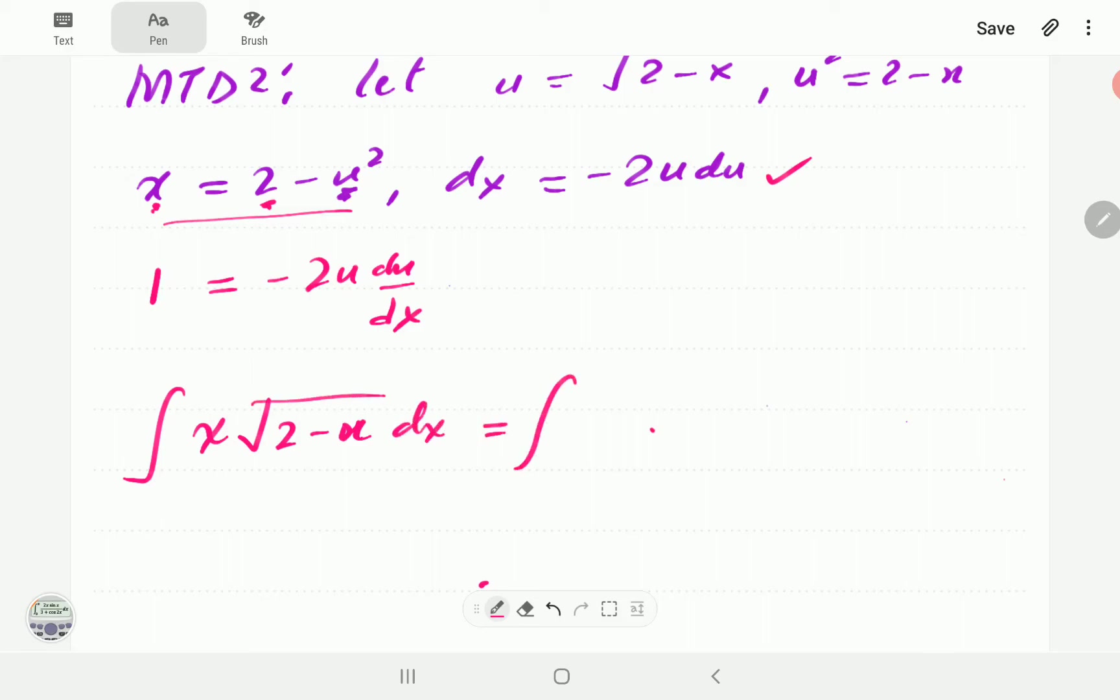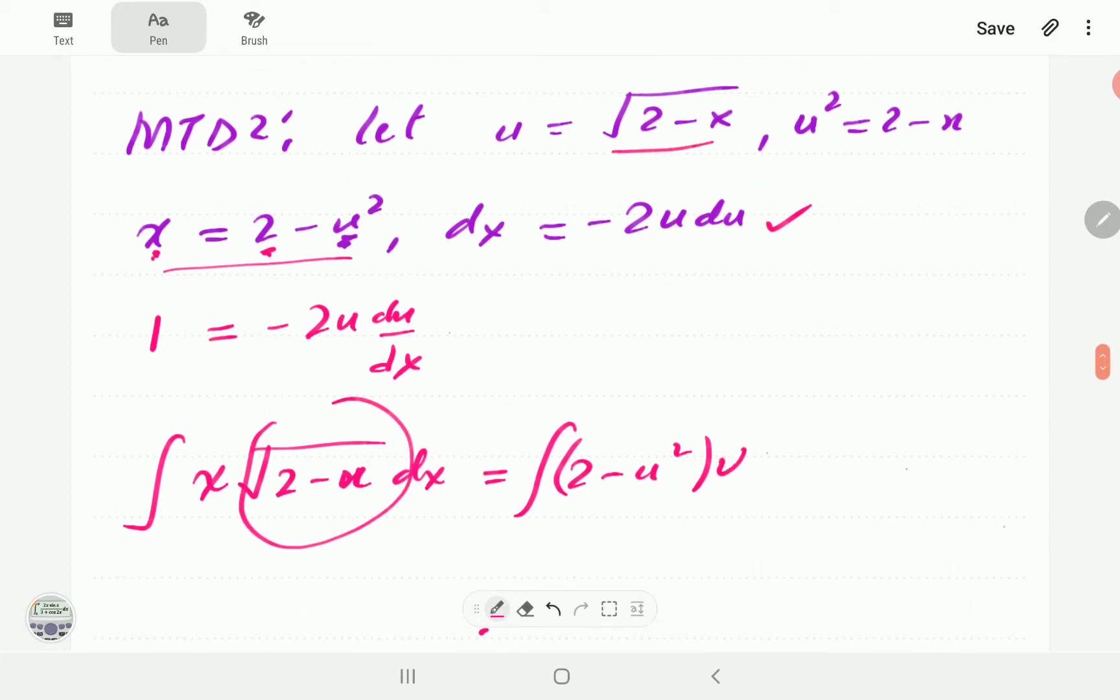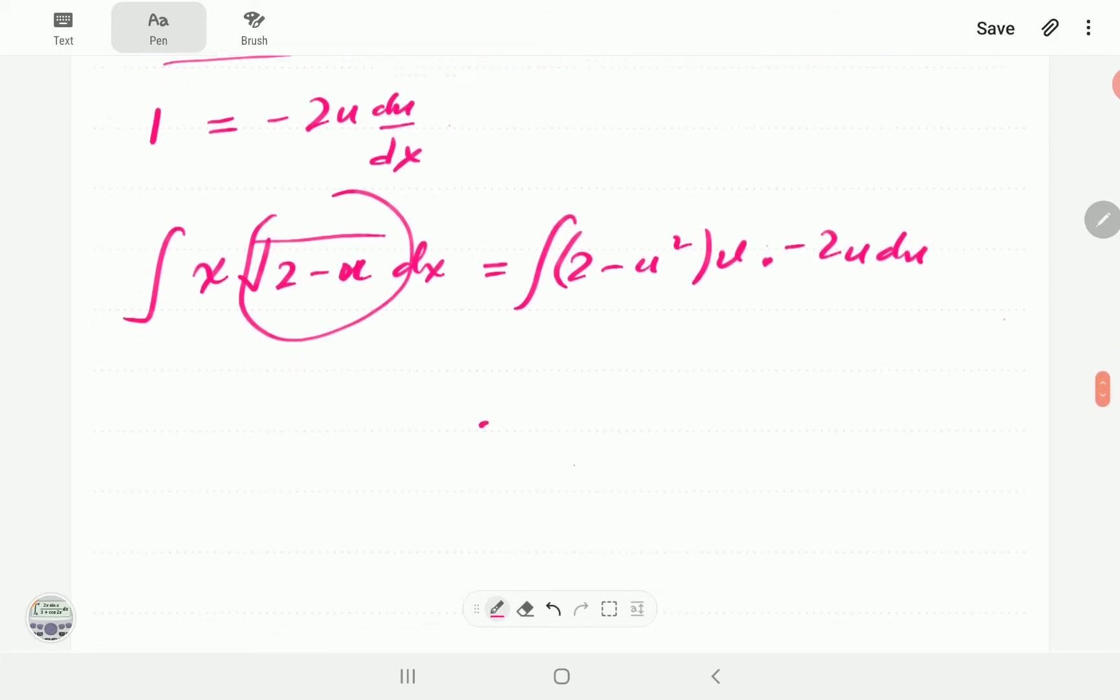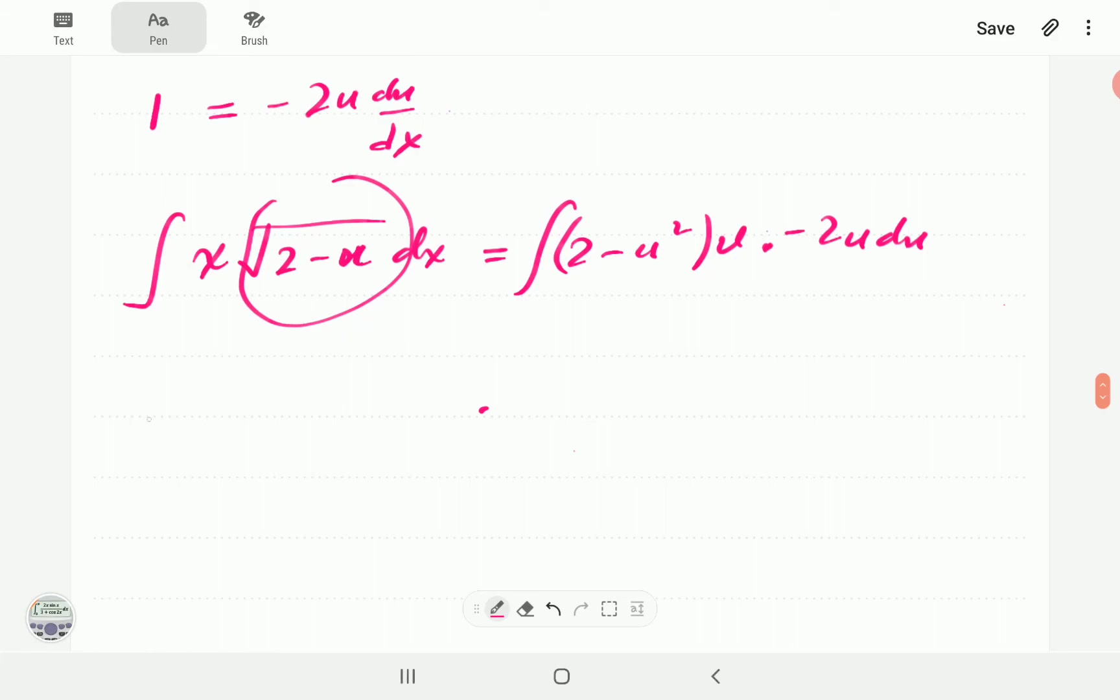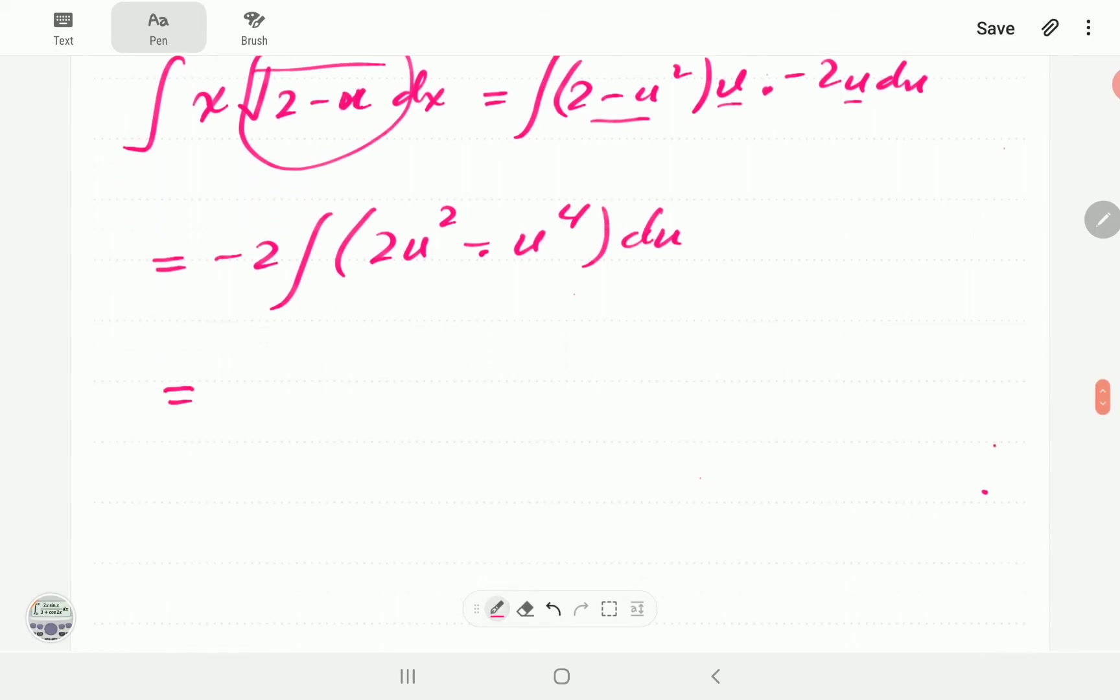Everything now in our integral can be written in terms of u again. So x this time is 2-u². And then this is just u. And dx is -2u du. If we take the negative outside, this is u² times 2u². And then this is u^4 du. And then we integrate.